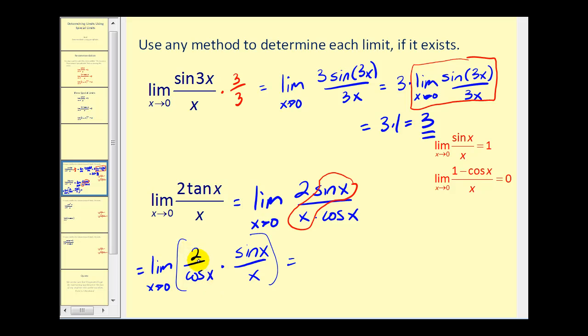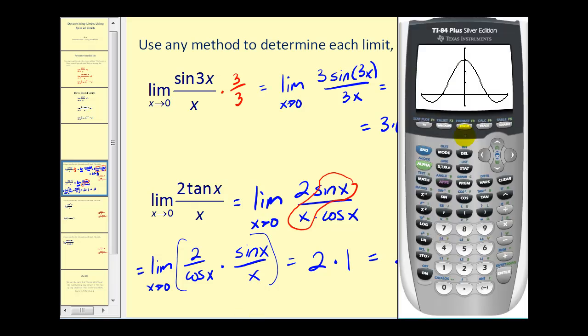So we would have two times—now we have the special limit of sin(x) divided by x, which we know now is equal to one. So two times one would give us a limit of two. Again, let's verify it graphically. We'll graph the original function, press graph, and again you can see as we approach zero from the left and the right, we do approach a function value of two.